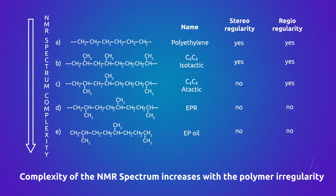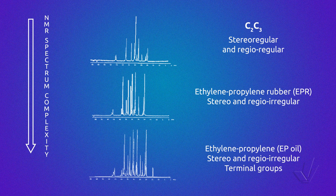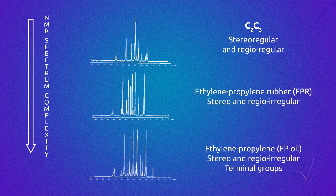The most complex spectra are those of low molecular weight polymers, where terminal groups can be detected. In this figure, three carbon-13 spectra can be seen. The first one is of a stereoregular ethylene-propylene copolymer. The second one is from an ethylene-propylene rubber, that is stereo and regio irregular. The last one is from an oil, where besides the resonance due to irregularity, terminal groups can be detected.